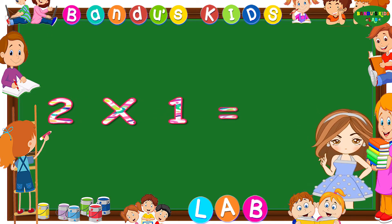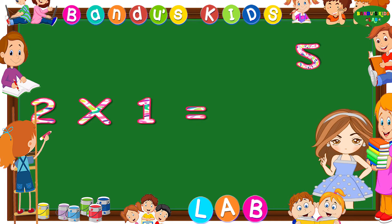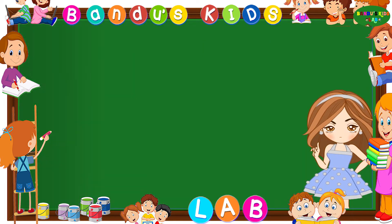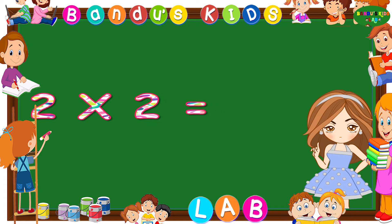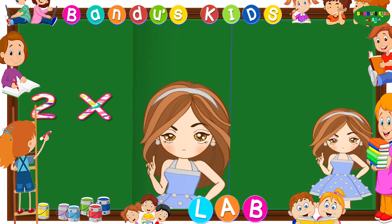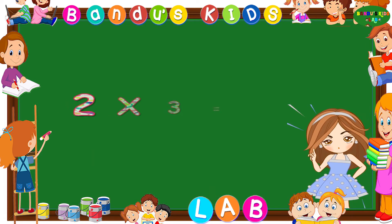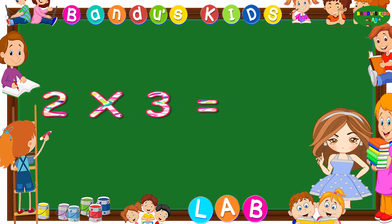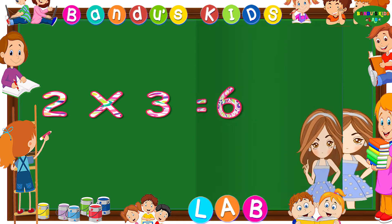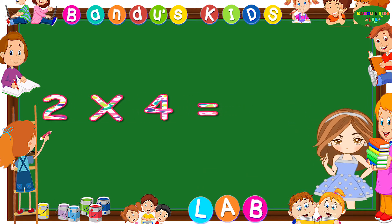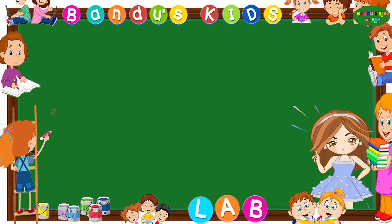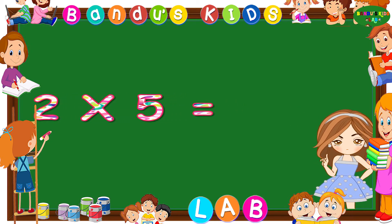Two ones are two. Two twos are four. Two threes are six. Two fours are eight. Two fives are ten.